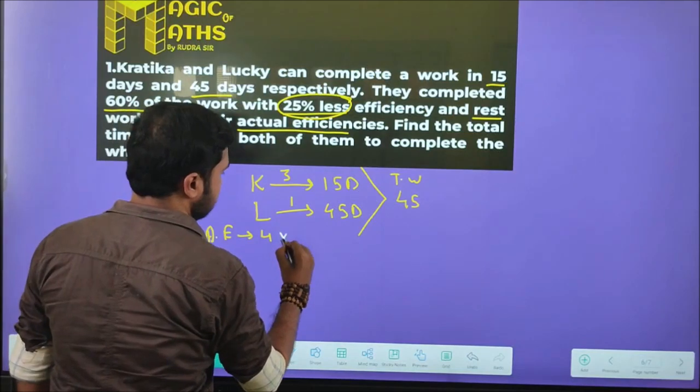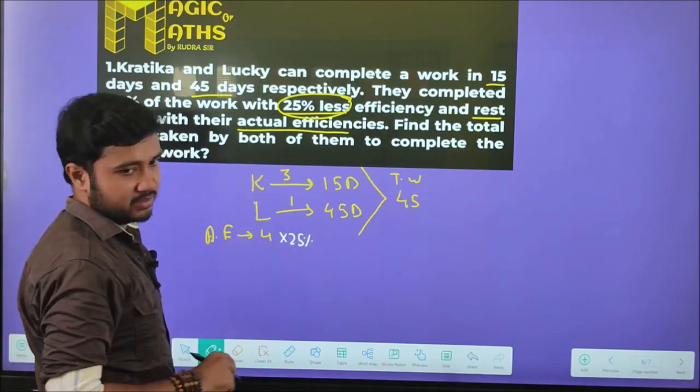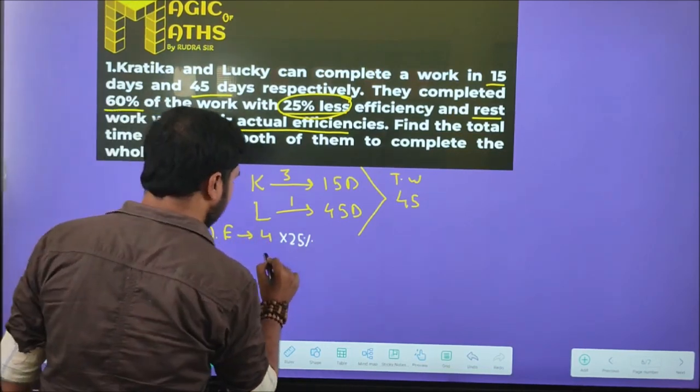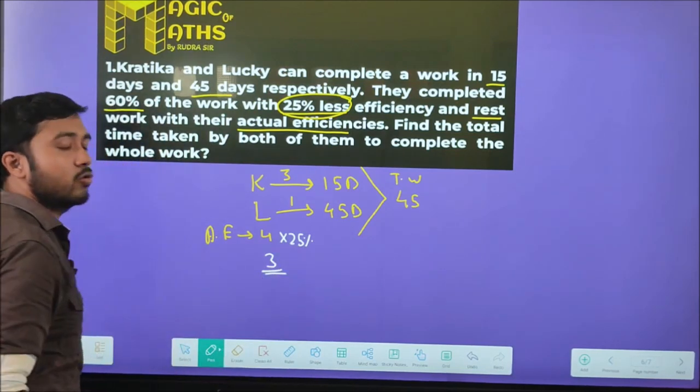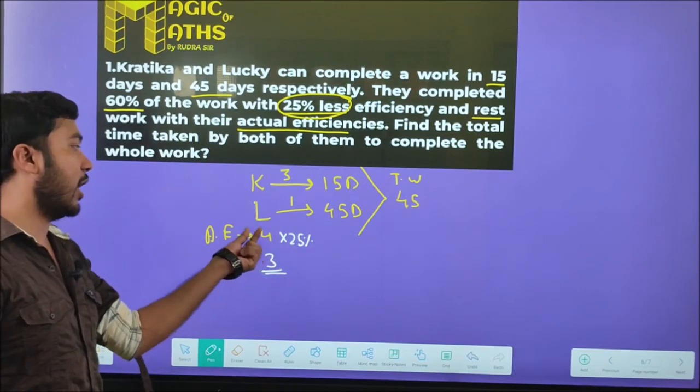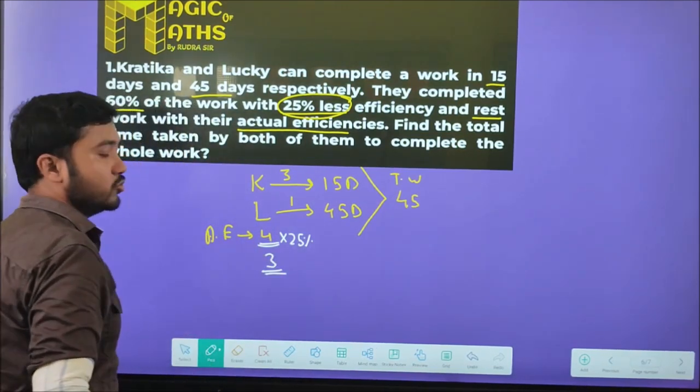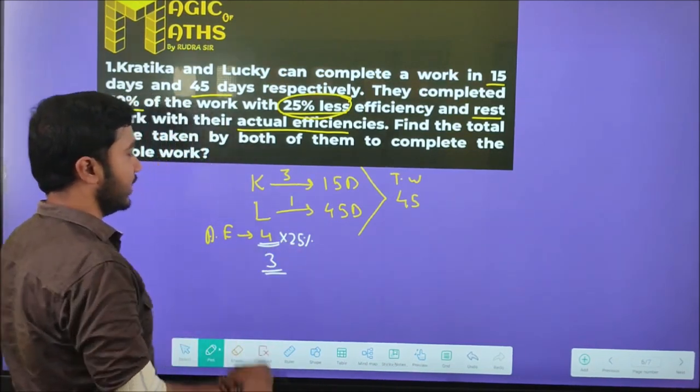25% means one-fourth. So 25% less efficiency means if actual efficiency is 4, it becomes 3. This is the key.